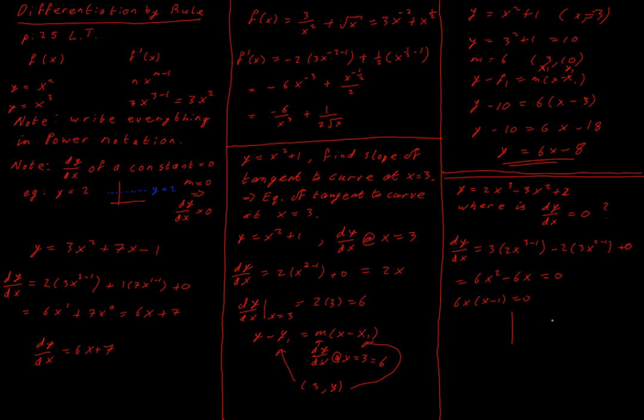Therefore, I have 6x equals zero, or x - 1 equals zero. So x equals zero, or x equals one.